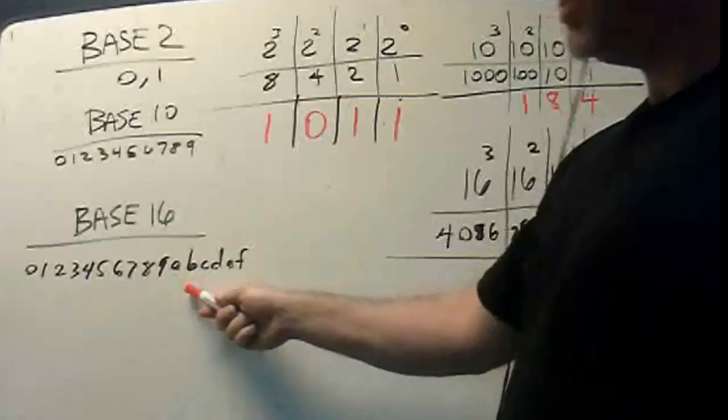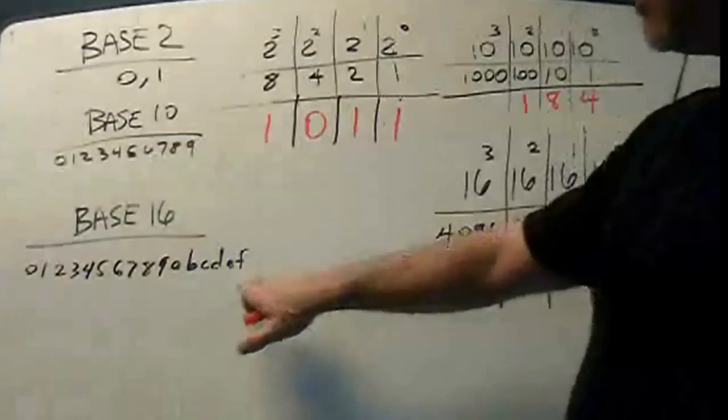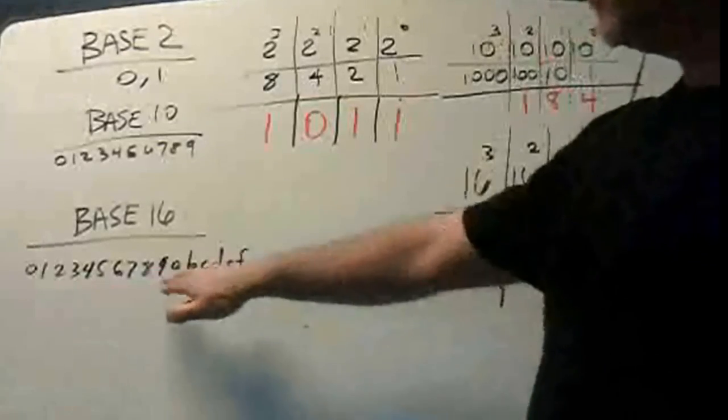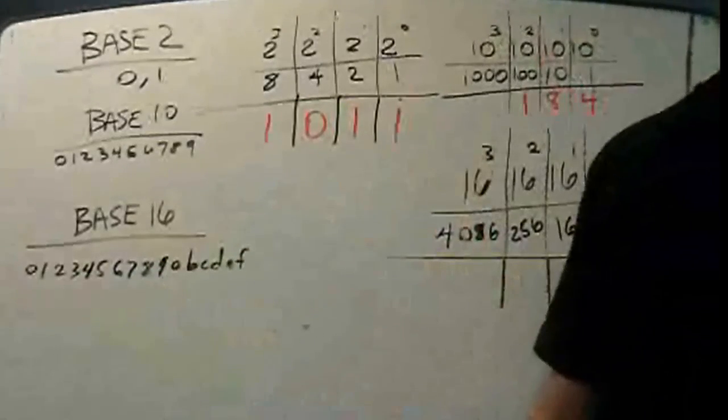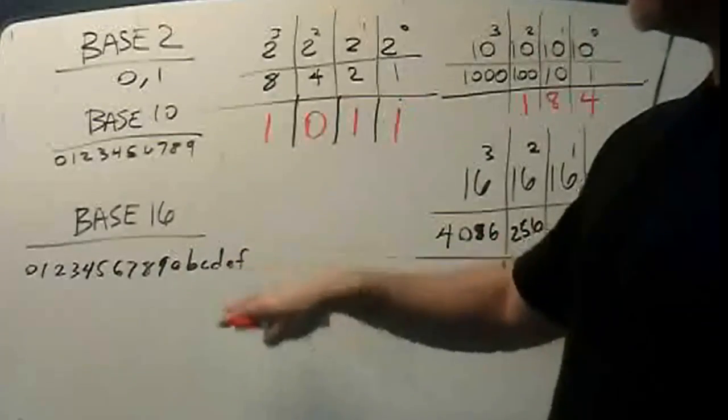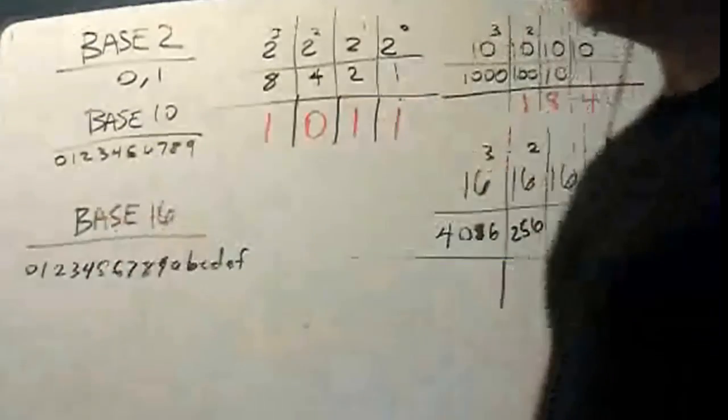And A is a 10, B is an 11, and F is a 15. So it goes from basically 0 to 15 with A, B, C, D, E, and F as 10, 11, 12, 13, 14, and 15. So those are your characters, or essentially your numbers, for a base 16 system.